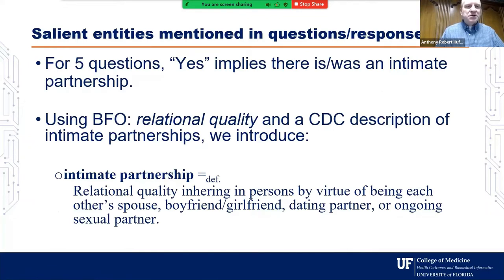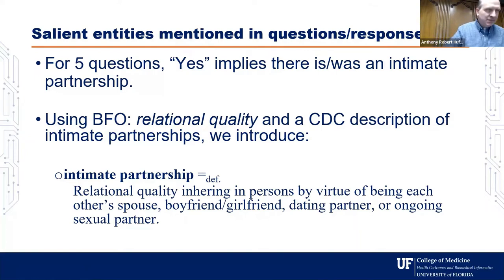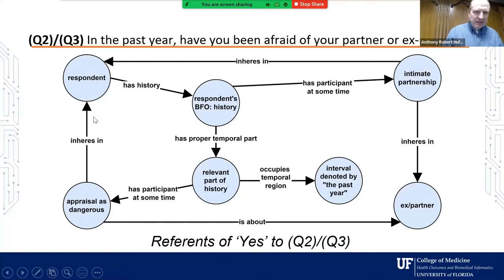For questions where a yes answer implies that there is or was an intimate partnership relationship, we used BFO's relational quality as a parent of intimate partnership, defined as a relational quality inhering in persons by virtue of being each other's spouse, boyfriend, girlfriend, dating partner, or ongoing sexual partner, according to the WHO text. The partner or ex-partner of the respondent are at opposite corners; intimate partnership inheres in both of them and is part of their history. The appraisal as dangerous is about the ex-partner.